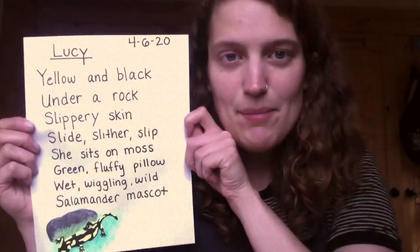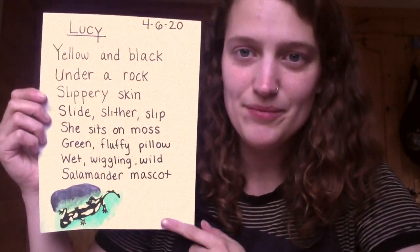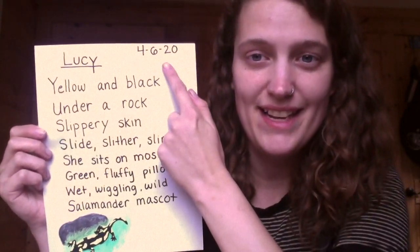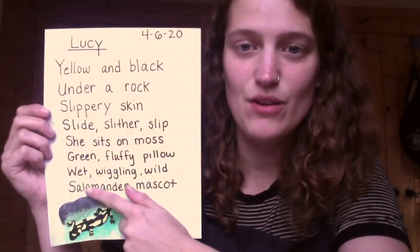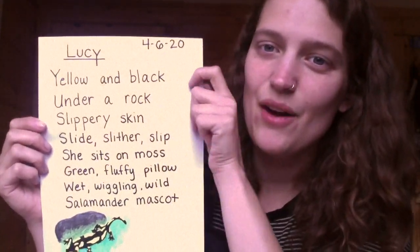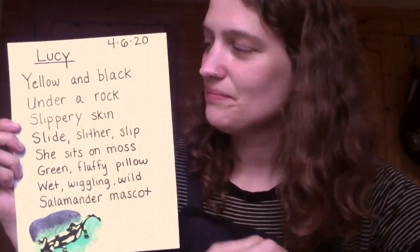So those were two poems written by first graders. Now I want to show you a poem that I wrote yesterday. This is my poem and this is what your poems are going to look like. You're going to use one whole piece of paper. Your poem is going to have a title, the date, and an illustration — a picture that goes with your poem. So this poem is called Lucy. I wrote it about Lucy, our class salamander.